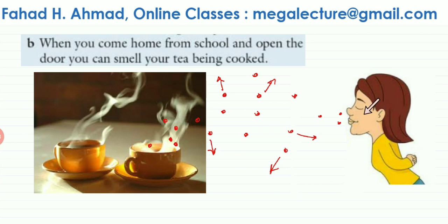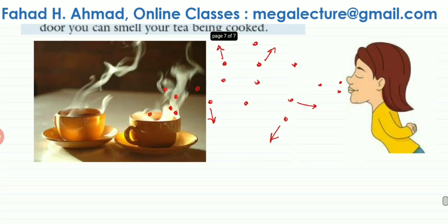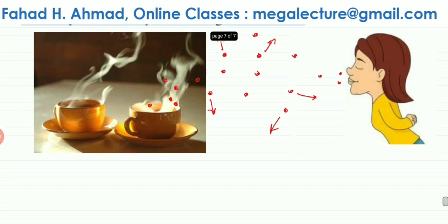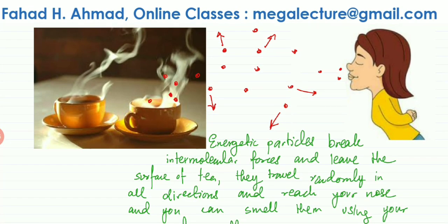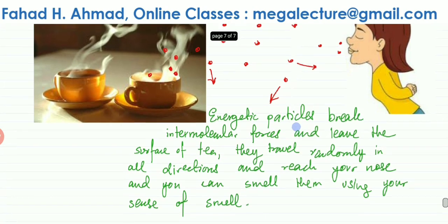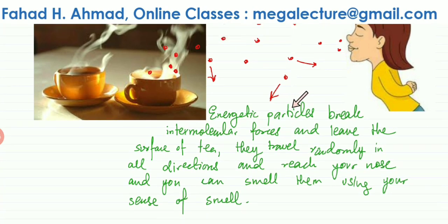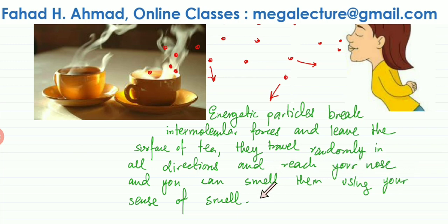Eventually a few of the particles reach the nose of the person shown, and because she has a sense of smell she can smell the tea very quickly. The explanation is: energetic particles break the intermolecular forces, leave the surface of the tea, start traveling randomly in all directions, and eventually reach your nose.